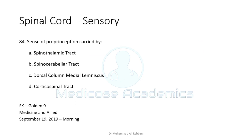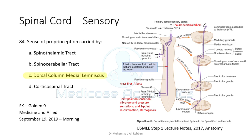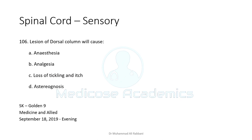The sense of proprioception is carried by the dorsal column medial lemniscus system. For this exam, you should be very well versed about three tracks: the dorsal column medial lemniscus system, the spinothalamic tract, and the corticospinal tract. You must know which particular sensations are carried by each of these tracks, including the anterolateral system which is also known as the spinothalamic tract.